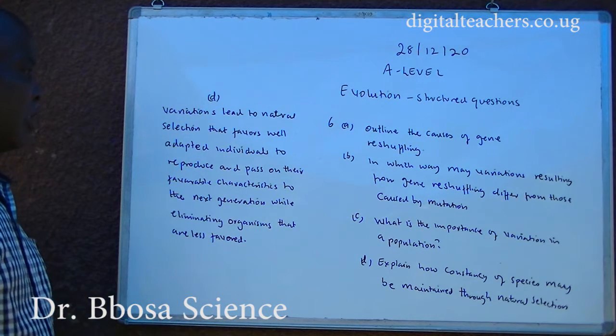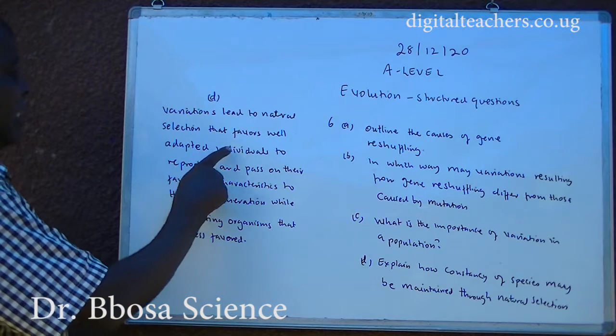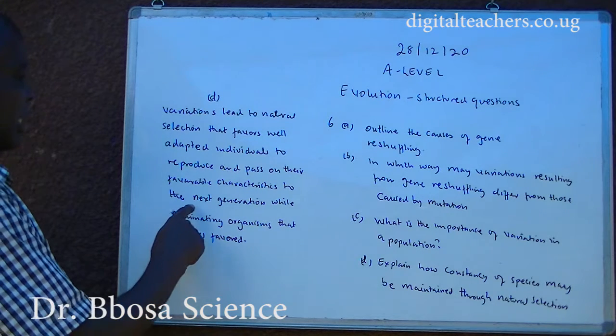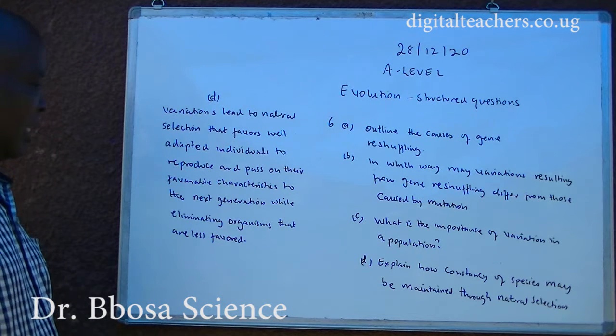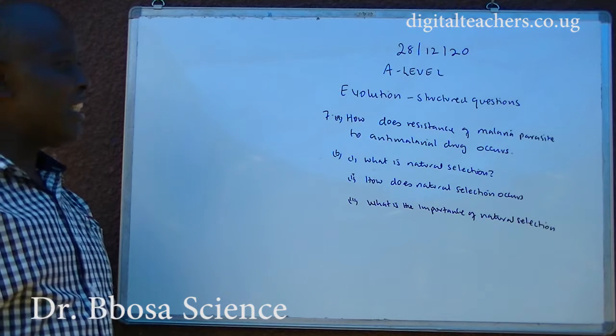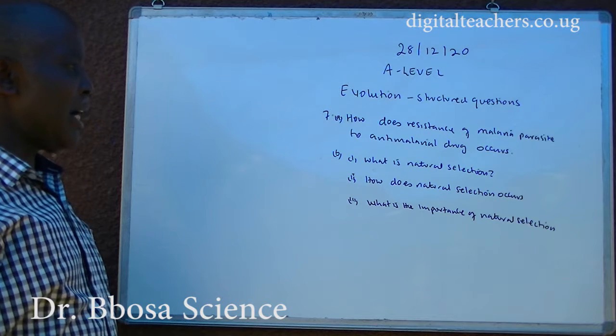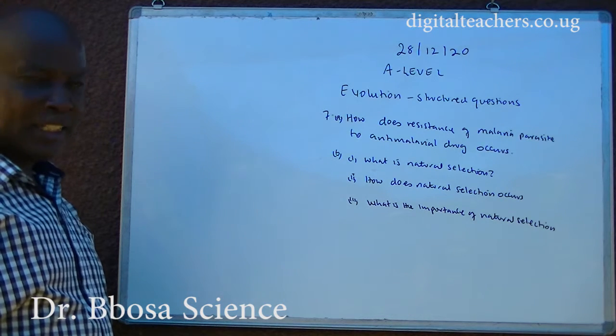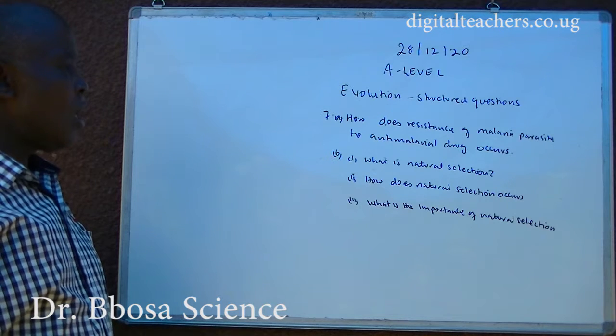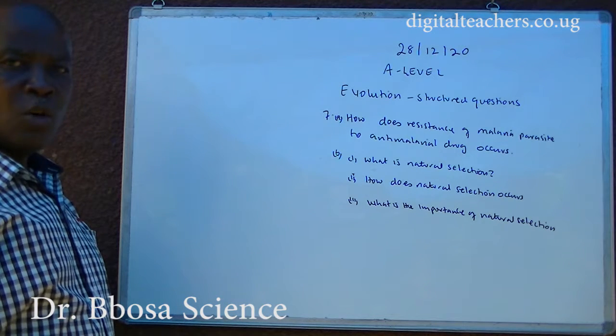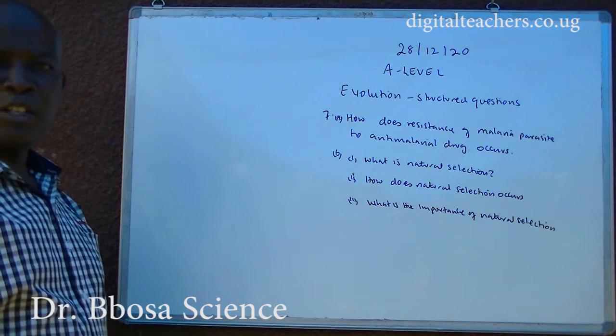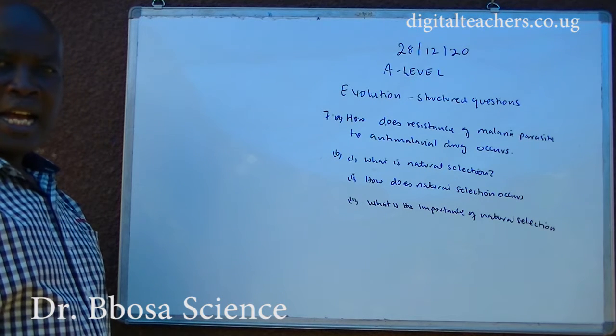D. Variation leads to natural selection that favors well-adapted individuals to reproduce and pass on their favorable characteristics to the next generation, while eliminating organisms that are less favored. Number seven. How does the resistance of malaria parasites to anti-malarial drugs occur? B one, what is natural selection? Two, how does natural selection occur? Three, what is the importance of natural selection? You can pause and answer.